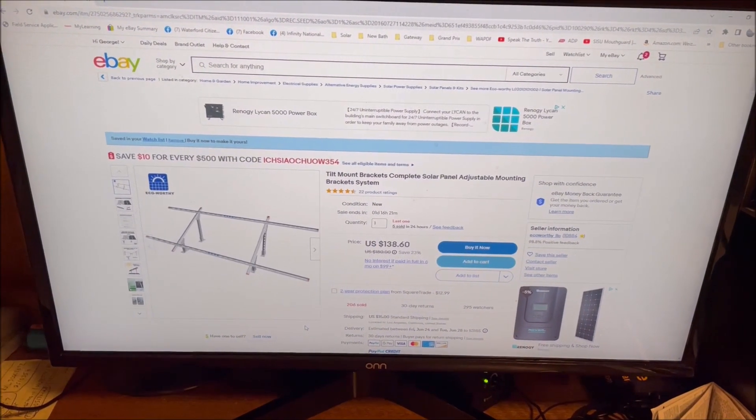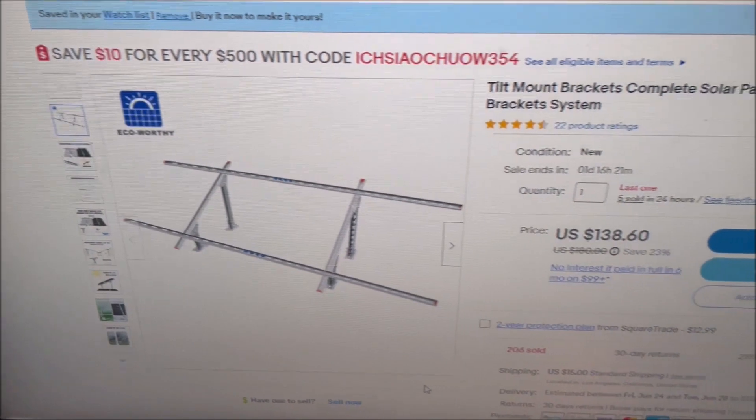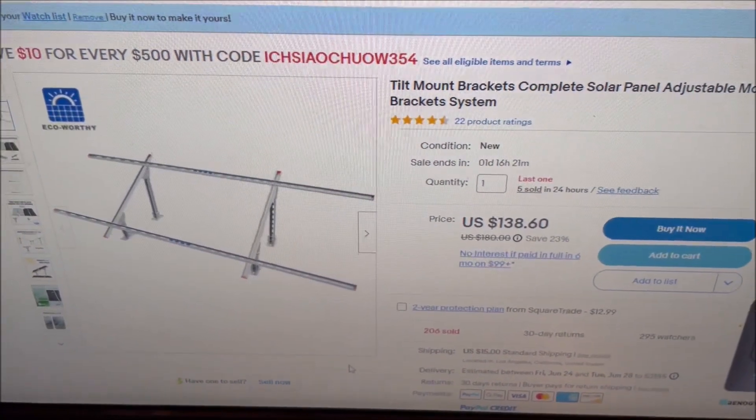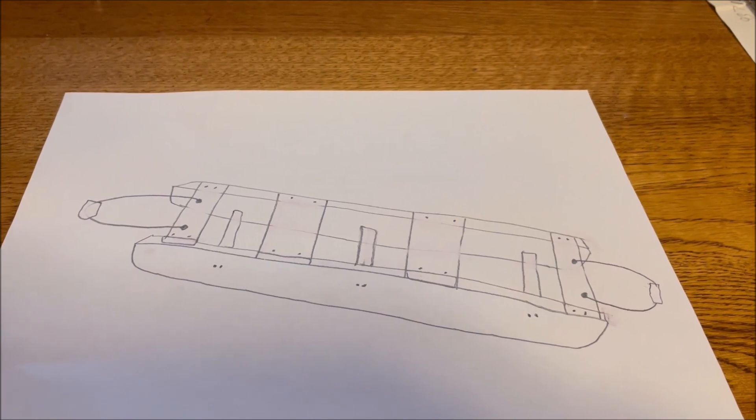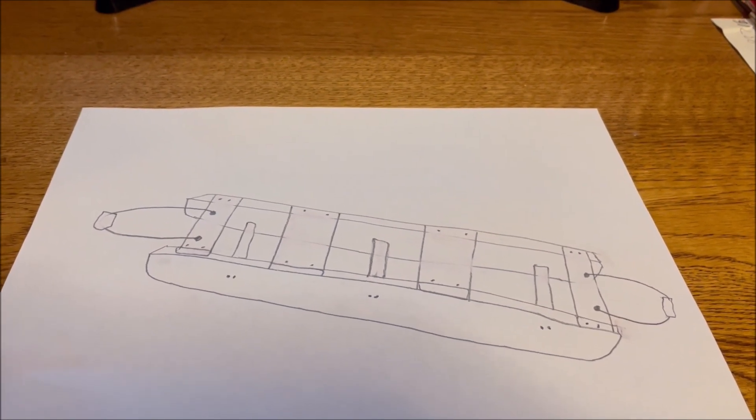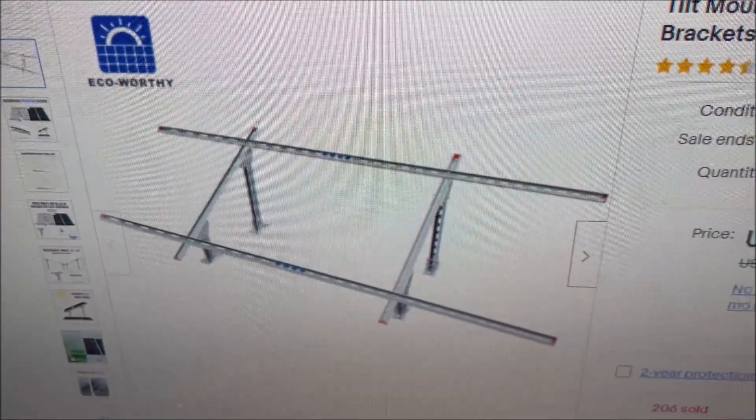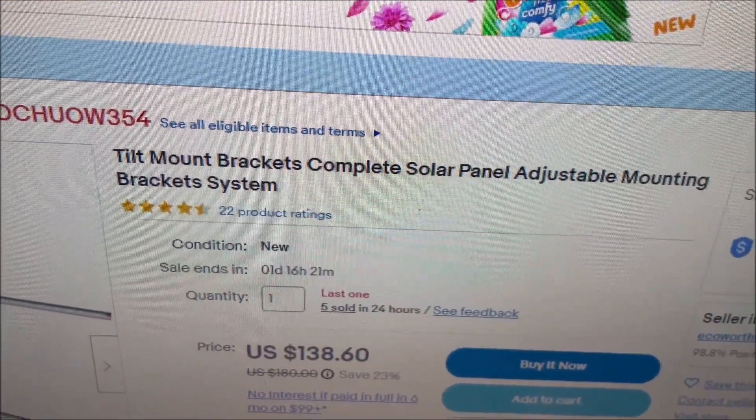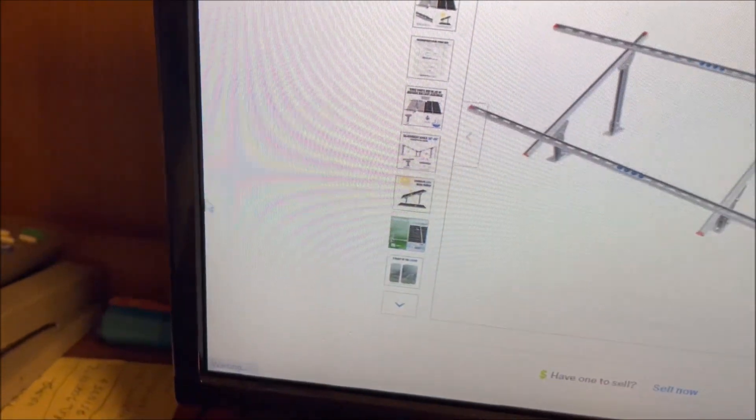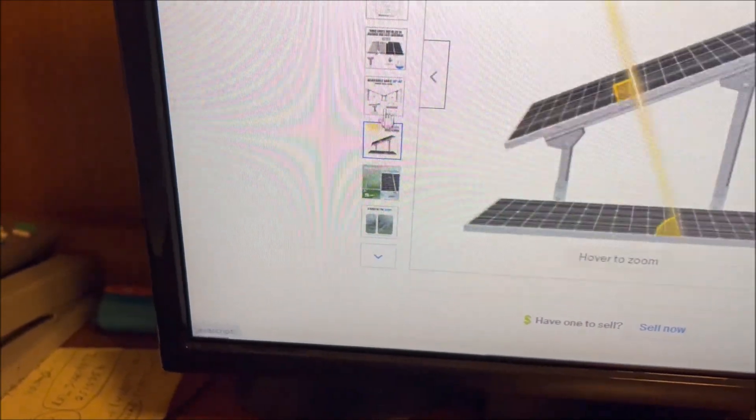Okay, the second and the last method I'm going to talk about is two parts. One, it's got this upper frame that you can get from Ecoworthy on eBay. And then this wooden cart that can be unplugged and moved around. So first thing is, Ecoworthy makes this tilt mount brackets, complete solar panel adjustable, where you can actually adjust it for different times of the year.